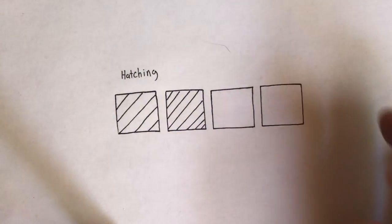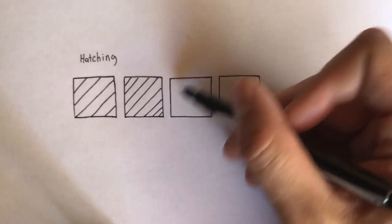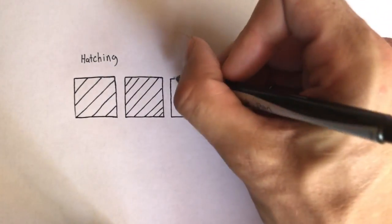So hopefully you can already kind of start to see the difference in what we're doing. So the third box, I'll do the same exact motion, just put the lines a little bit closer together.